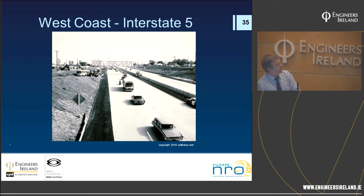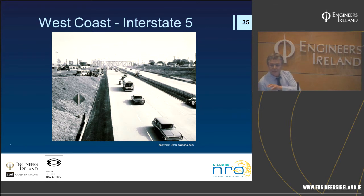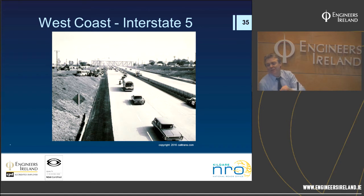Interstate 5 was developed with a typical concrete road surface, characteristic of much of the interstate system — slip-form concrete construction which also influenced road development in Europe. The Belgians sent a knowledge-sharing team to America to witness slip-form concrete road construction and replicated it in Belgium. Here in Ireland, the first dual carriageway — Dublin Naas Road, built in the 1950s and 60s — was also concrete construction, which was likely influenced by American interstate technology, perhaps through the British who adopted American concrete slip-form construction.